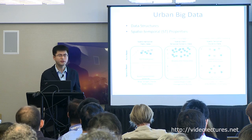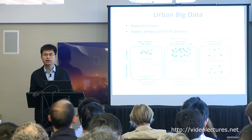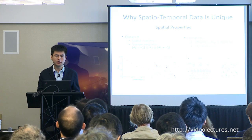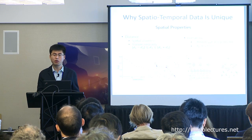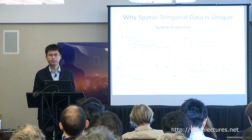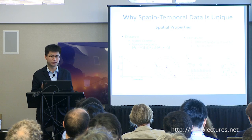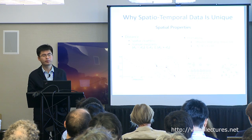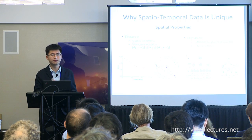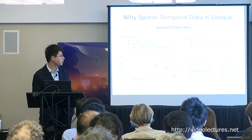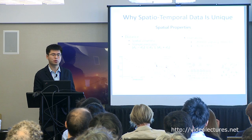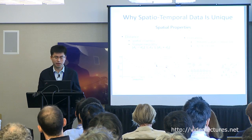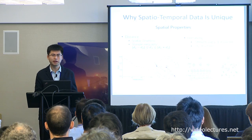What is unique about spatial-temporal data? In terms of spatial properties, there is a distance between objects. This relates to the first law of geography: everything is related, but nearby things are more related.